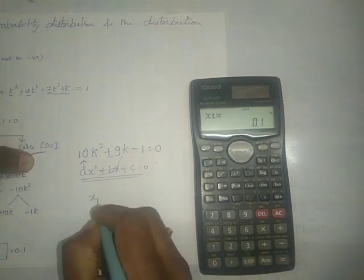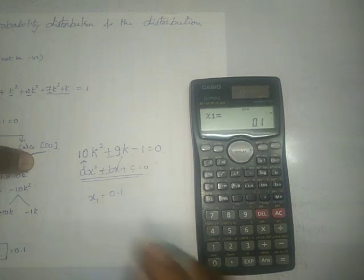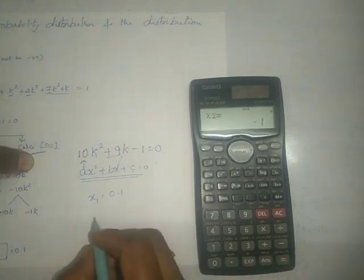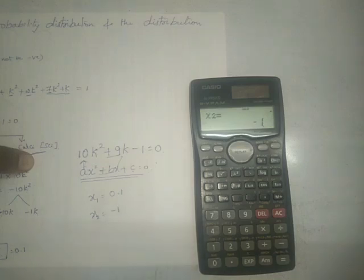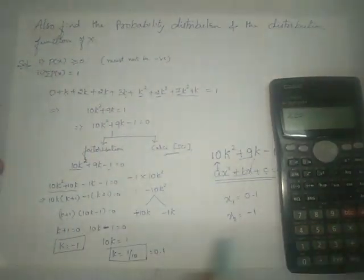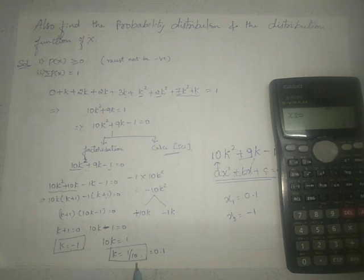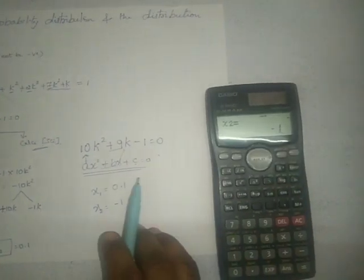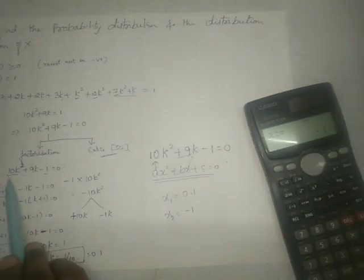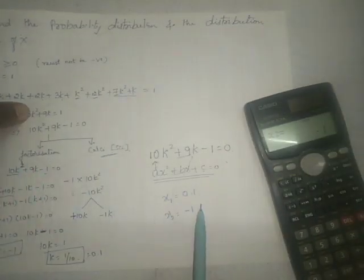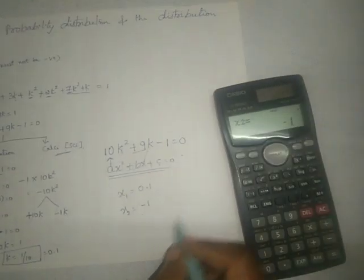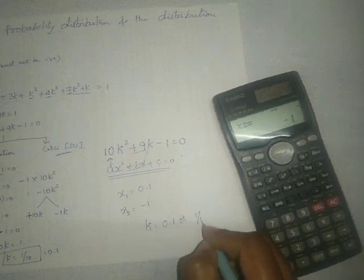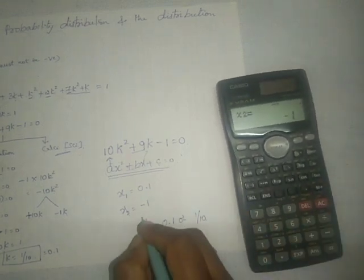We get x1 equals 0.1; press equals one more time and x2 equals minus 1. We got the same result as with the traditional factorization method, but here we got the answer in just one step. So the value of K is 0.1 or 1 by 10.